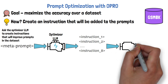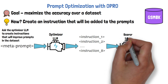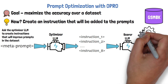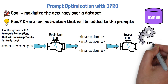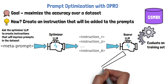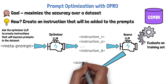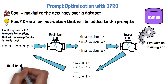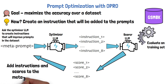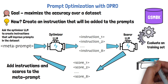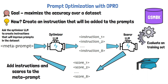These 8 candidate instructions are fed into another LLM called the Scorer LLM, which can be the same LLM as the Optimizer LLM or a different one. We then evaluate the accuracy of the Scorer LLM over the training set 8 times, each time adding a different candidate instruction to the prompts, yielding 8 accuracy scores. These scores are added back to the MetaPrompt together with the candidate instructions to go through the process again. When no improvement in accuracy is observed, the process stops and we end with the instruction that achieved the best accuracy on the training set.